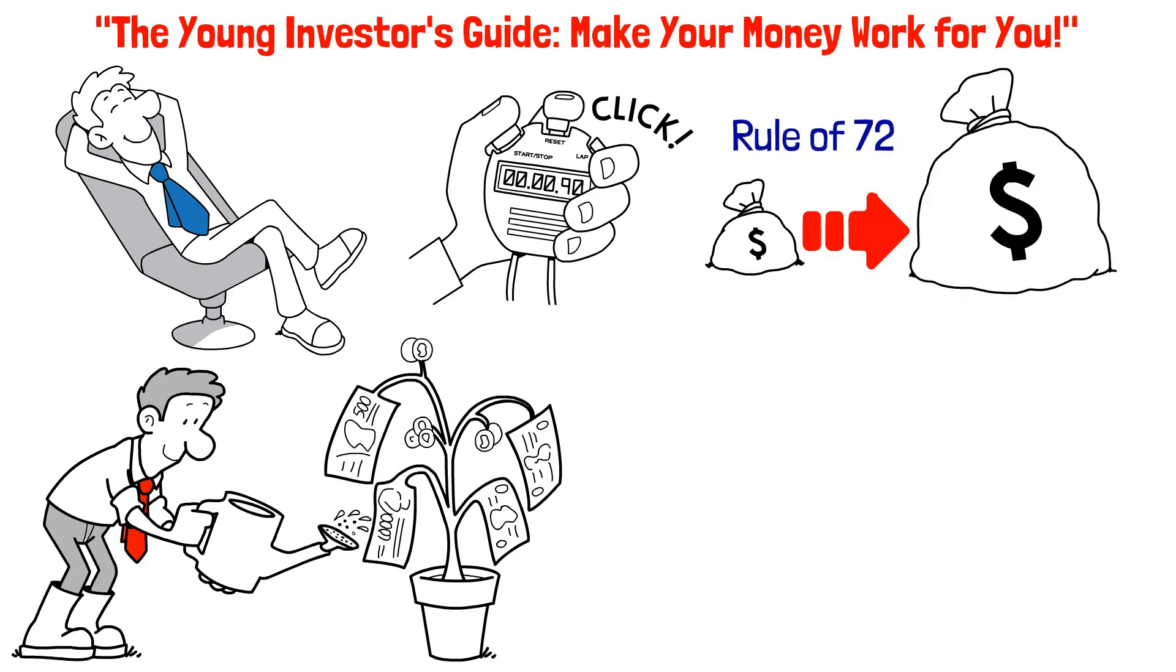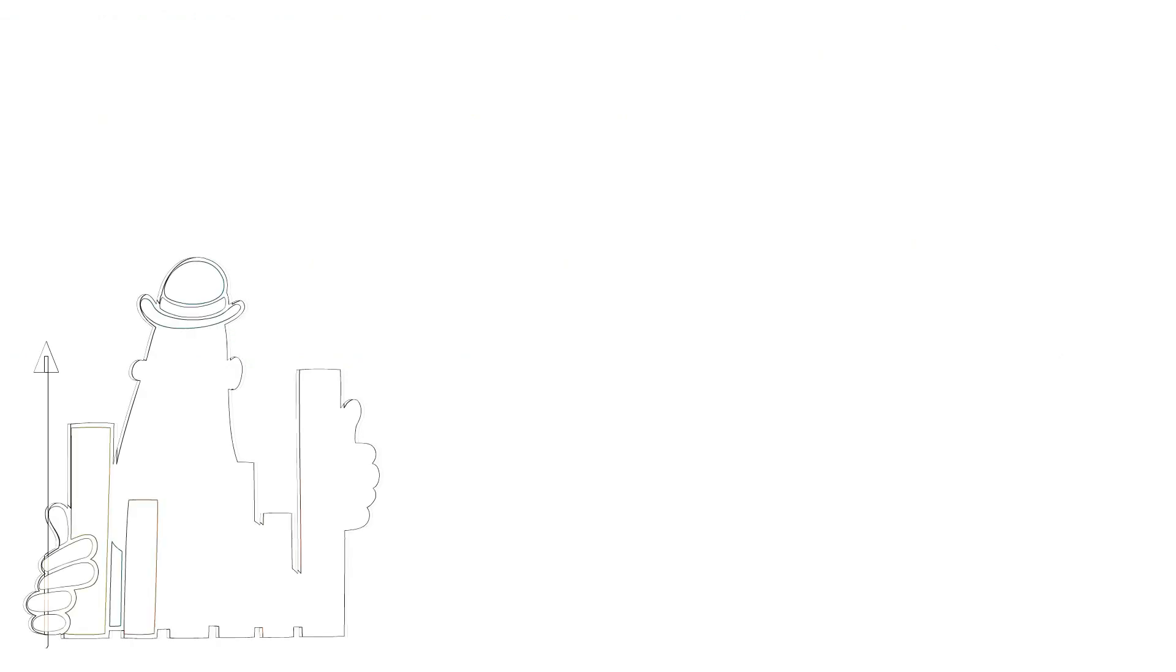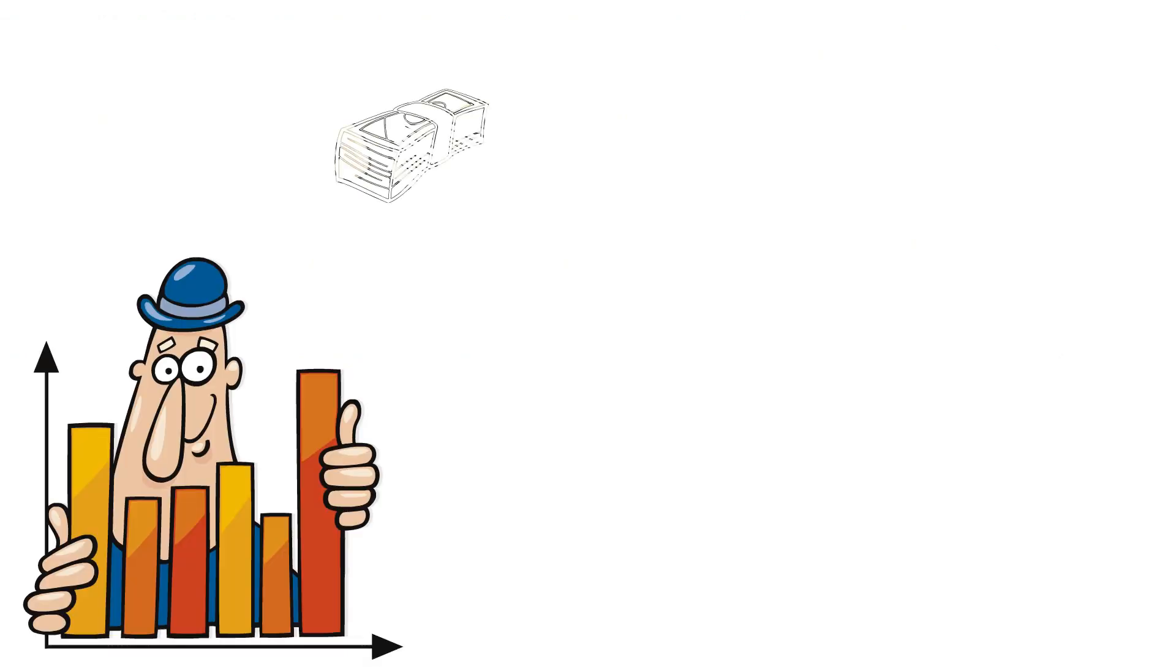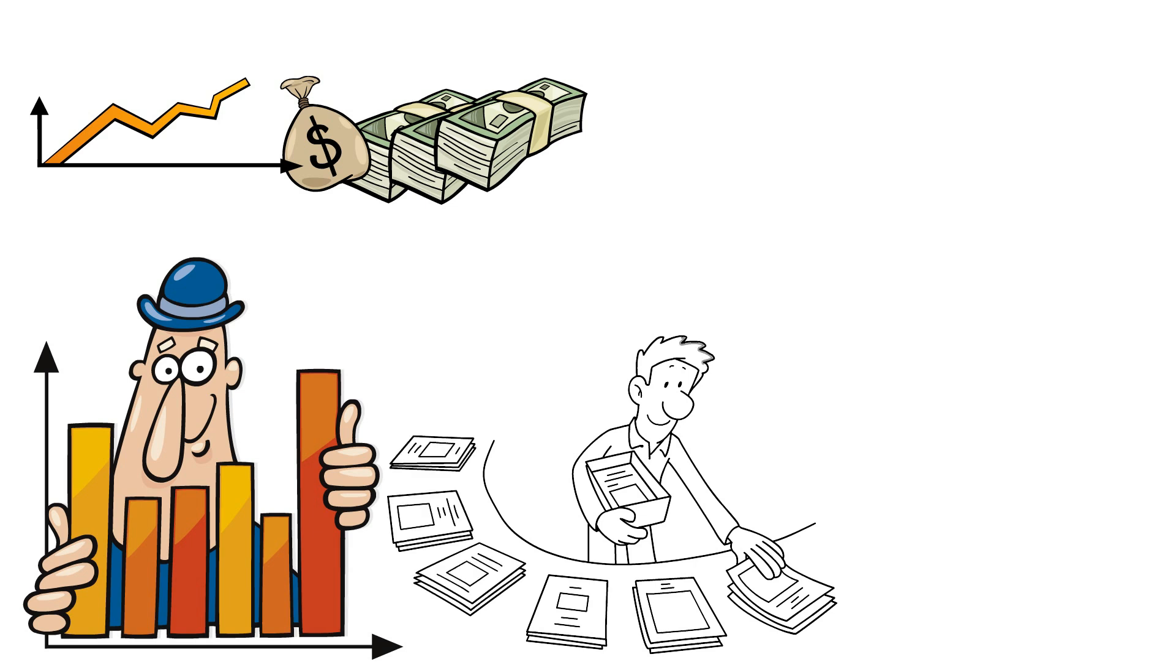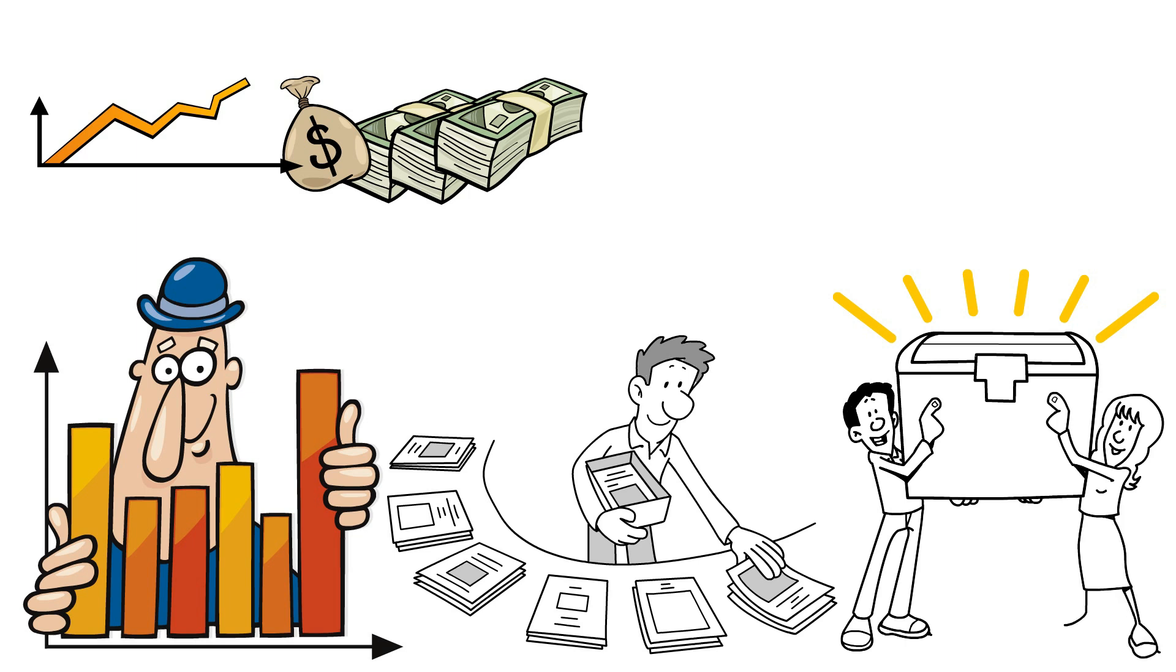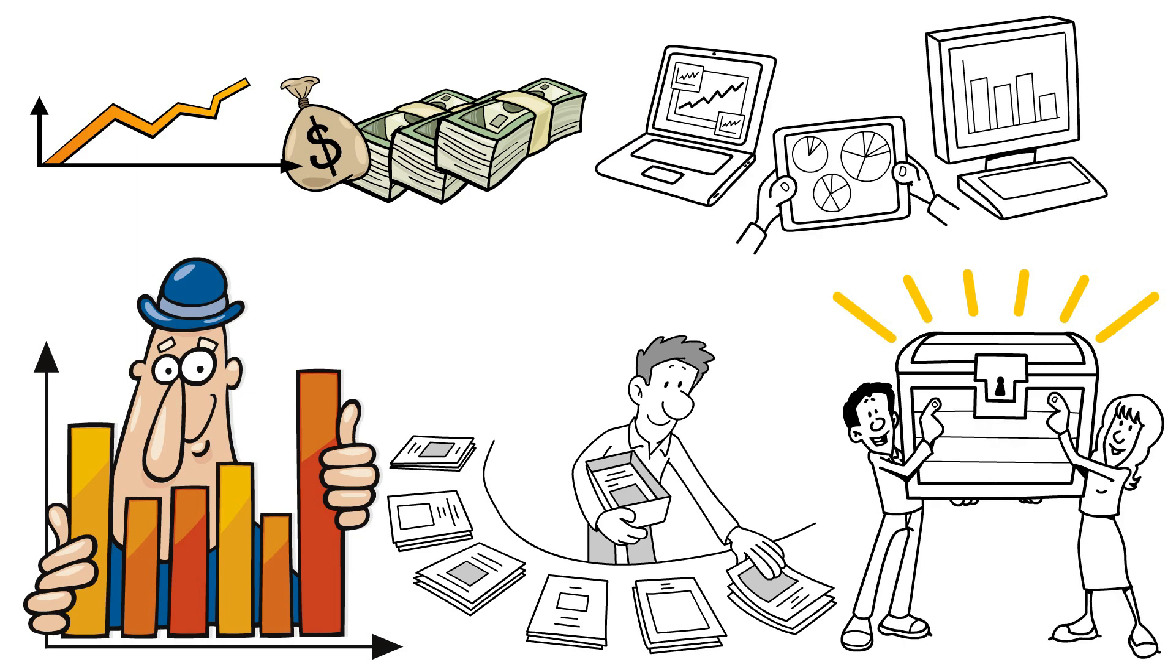The Rule of 72 is a simple way to calculate how long it will take for your investments to double in value. By dividing 72 by the annual interest rate, you can find out how many years it will take. Instead of spending your money on things that won't bring you long-term benefits, consider investing it. The money you save and invest now can grow exponentially over time. With a little effort and the right strategy, you can make your money work for you and achieve your financial goals faster. So join the investing world today and become your money's boss.